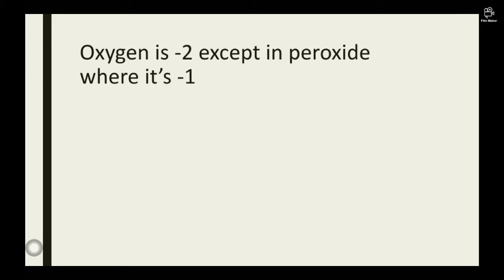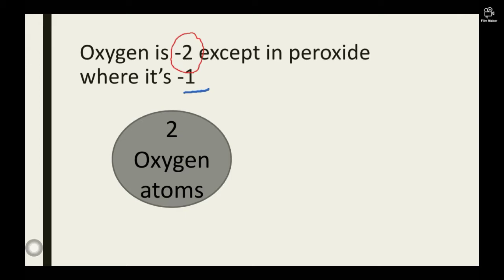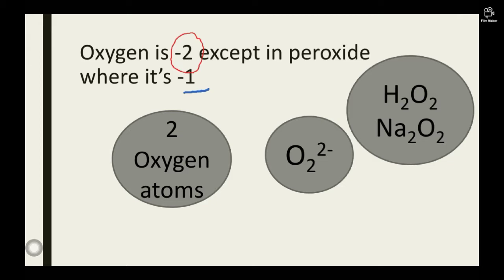Oxygen is always negative 2 in compounds except in peroxide where it's negative 1. Peroxides consist of two oxygen atoms in this form of ion: O2 2 minus. So whenever you see an ion of this sort, that is how a peroxide actually looks like. Common examples of peroxides are H2O2 and Na2O2. Anytime you see compounds of this sort, the oxidation number of oxygen becomes negative 1. Always oxygen is negative 2, but in peroxides it changes.